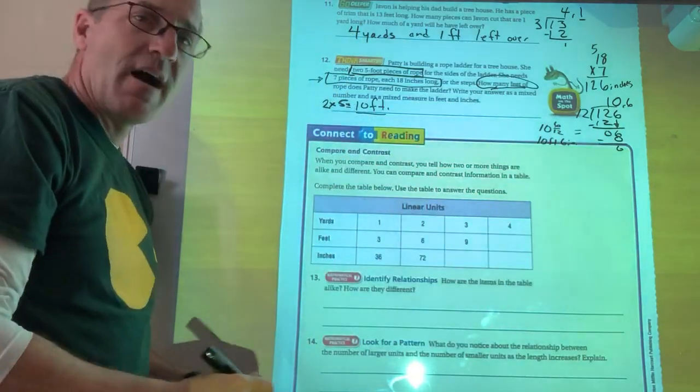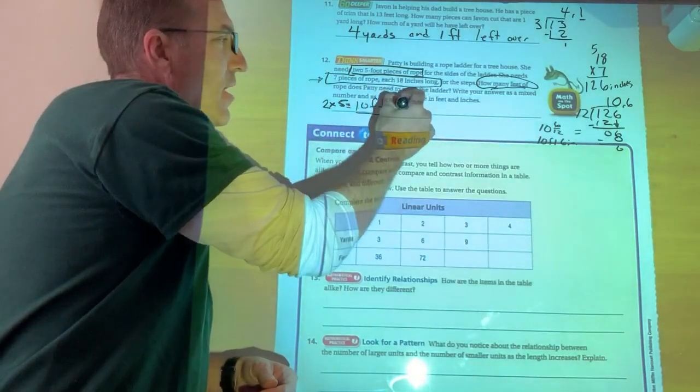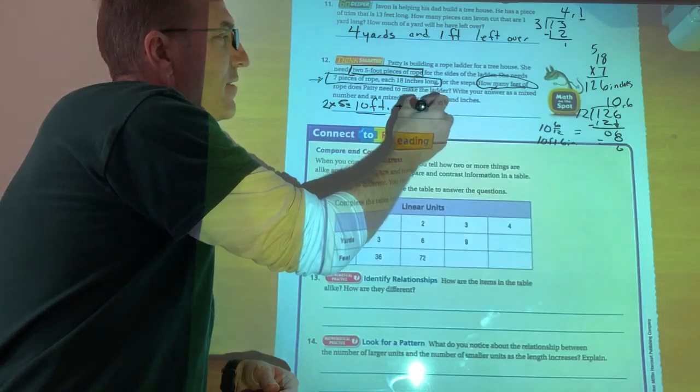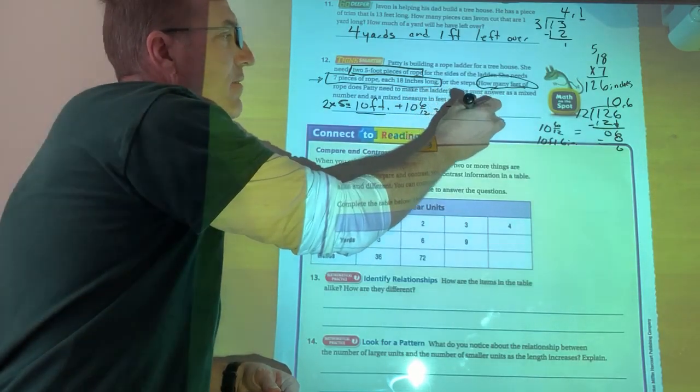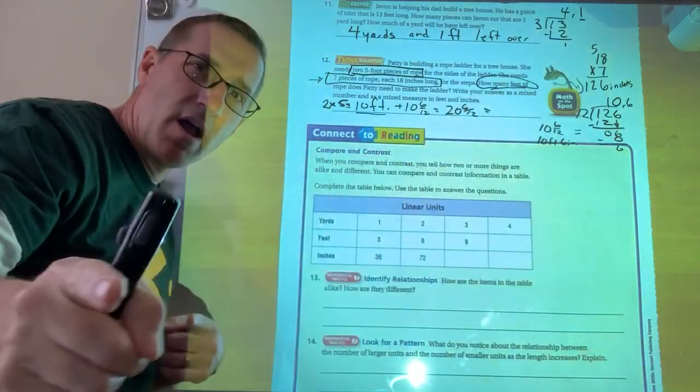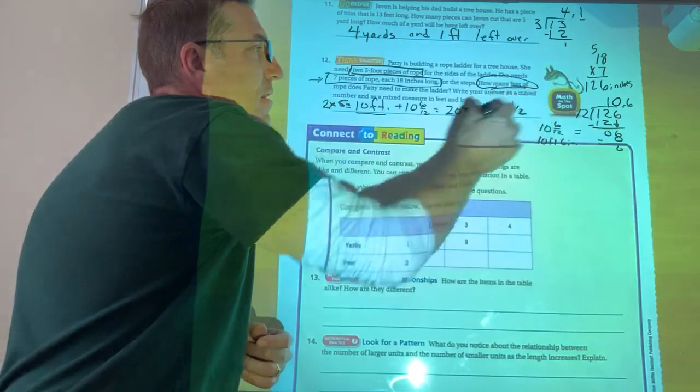Okay. So now I've got to add this to what I already have. Plus 10 and six twelfths equals 20 and six twelfths, which also equals 20 and what? One and a half.